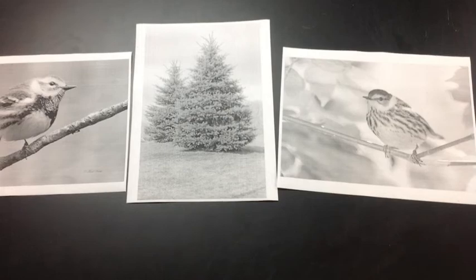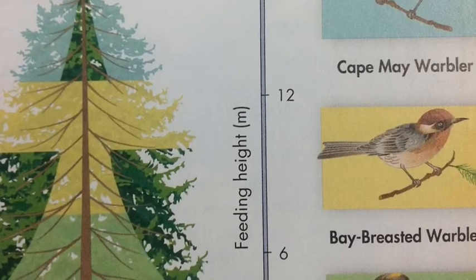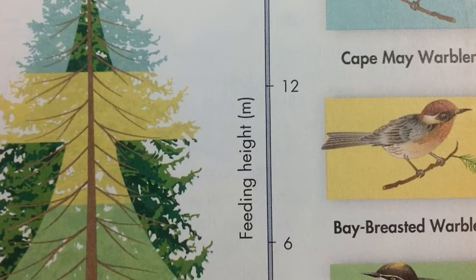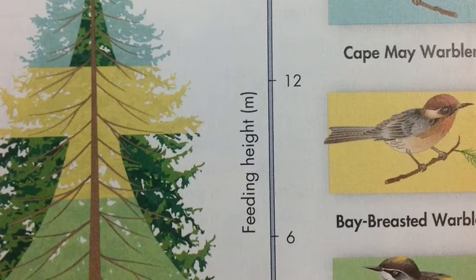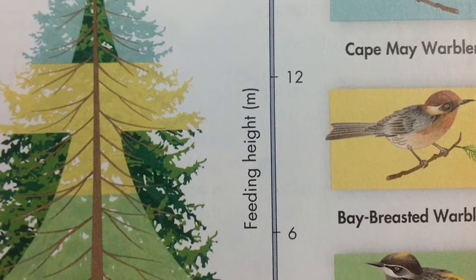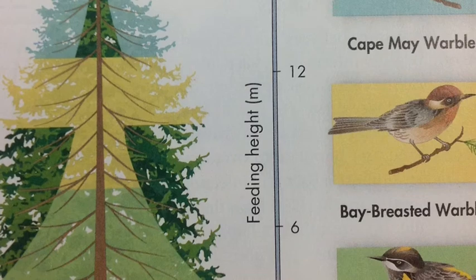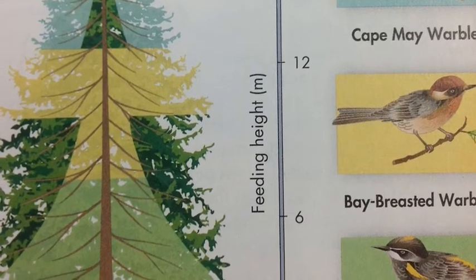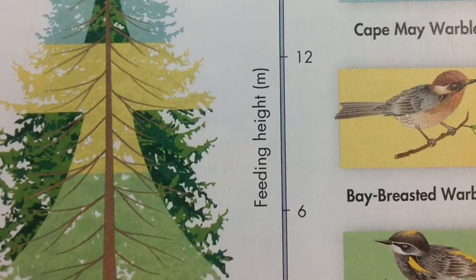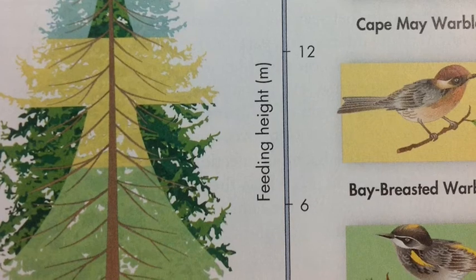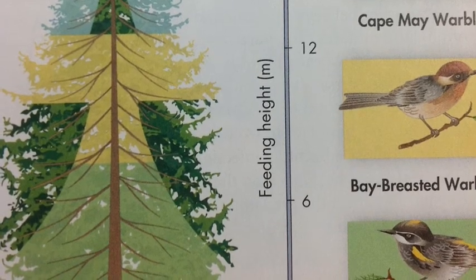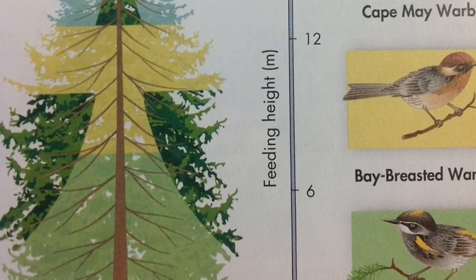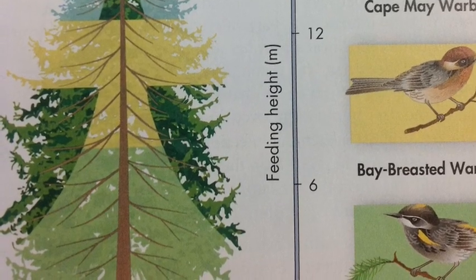Oftentimes, species will even have special adaptations specifically for their resources. There are examples of birds with different shaped beaks — all within the same genus, but due to resource partitioning, each bird eats a different type of nut. They'll have different beaks shaped for that specific fruit or nut. So while they might be very closely related genetically, they've adapted for their specific niche.